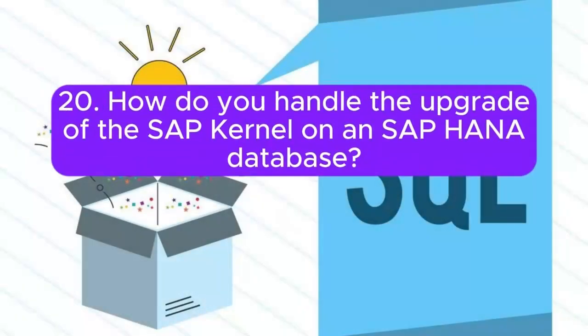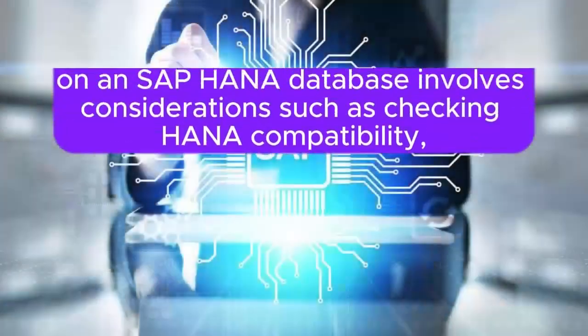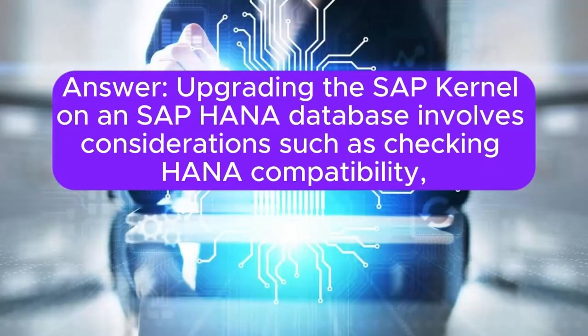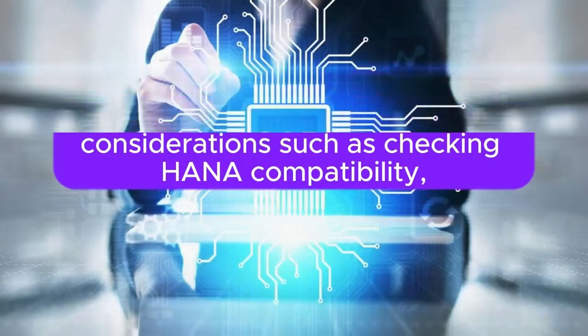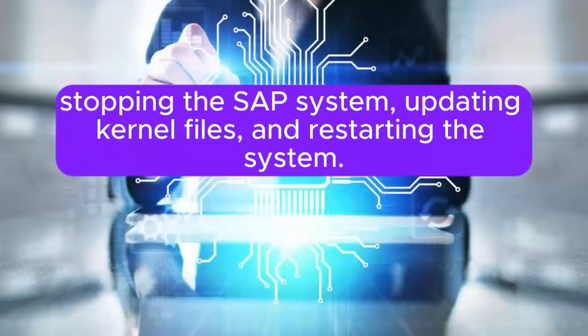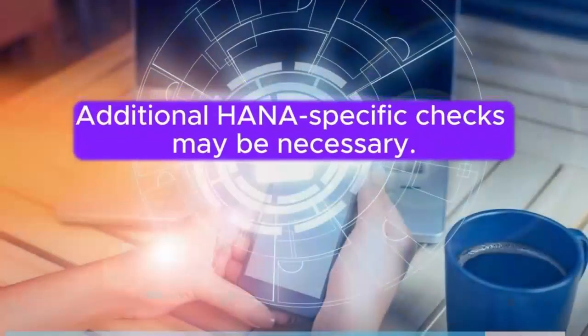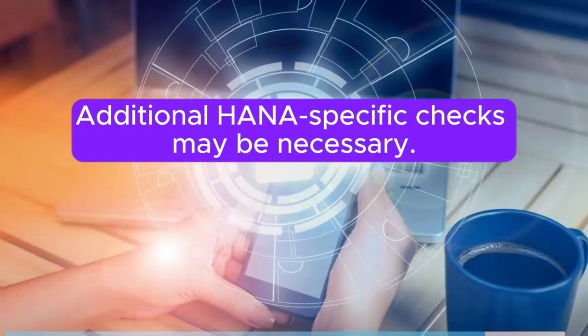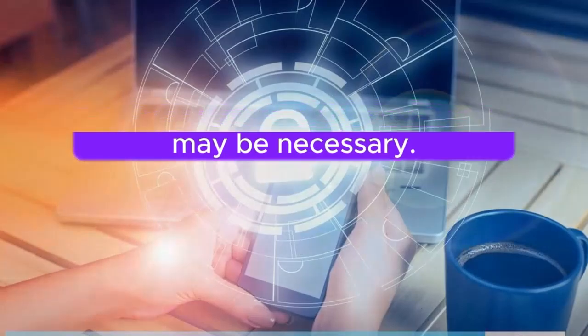20. How do you handle the upgrade of the SAP kernel on a SAP HANA database? Upgrading the SAP kernel on a SAP HANA database involves considerations such as checking HANA compatibility, stopping the SAP system, updating kernel files, and restarting the system. Additional HANA-specific checks may be necessary.